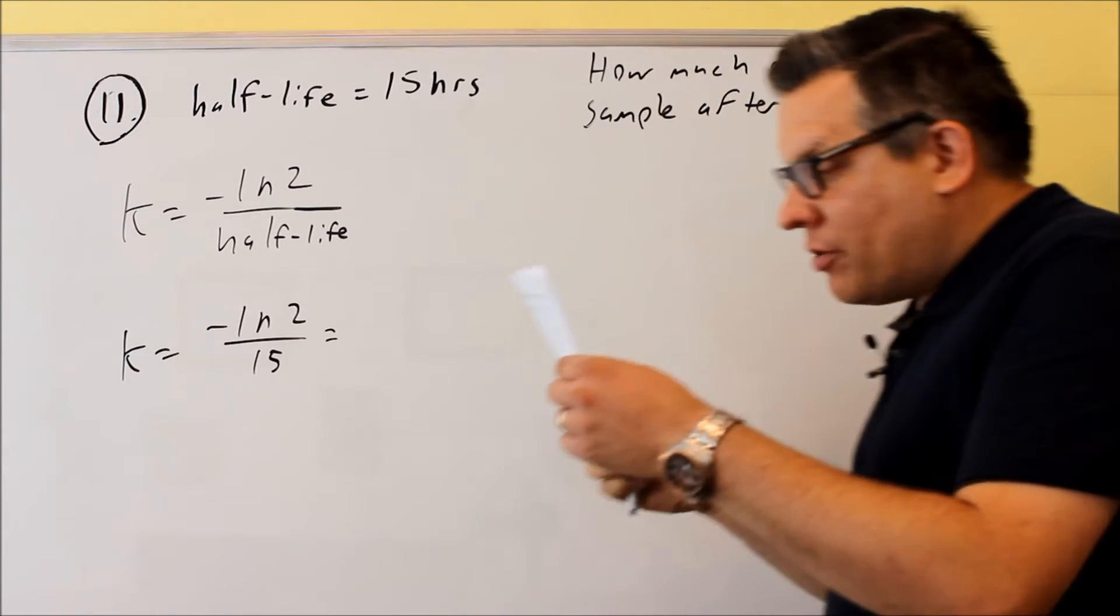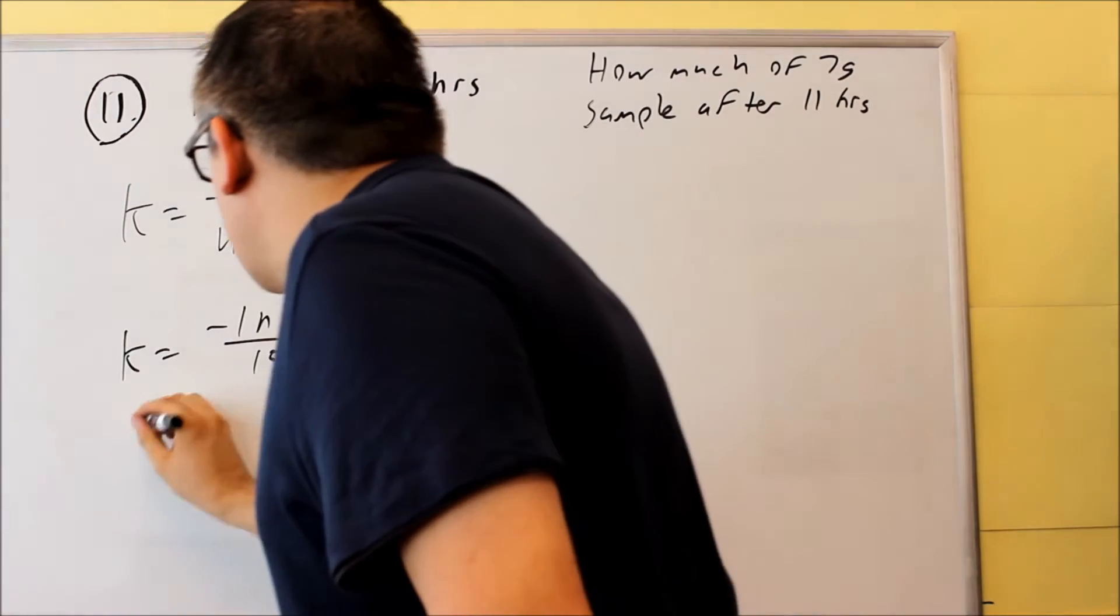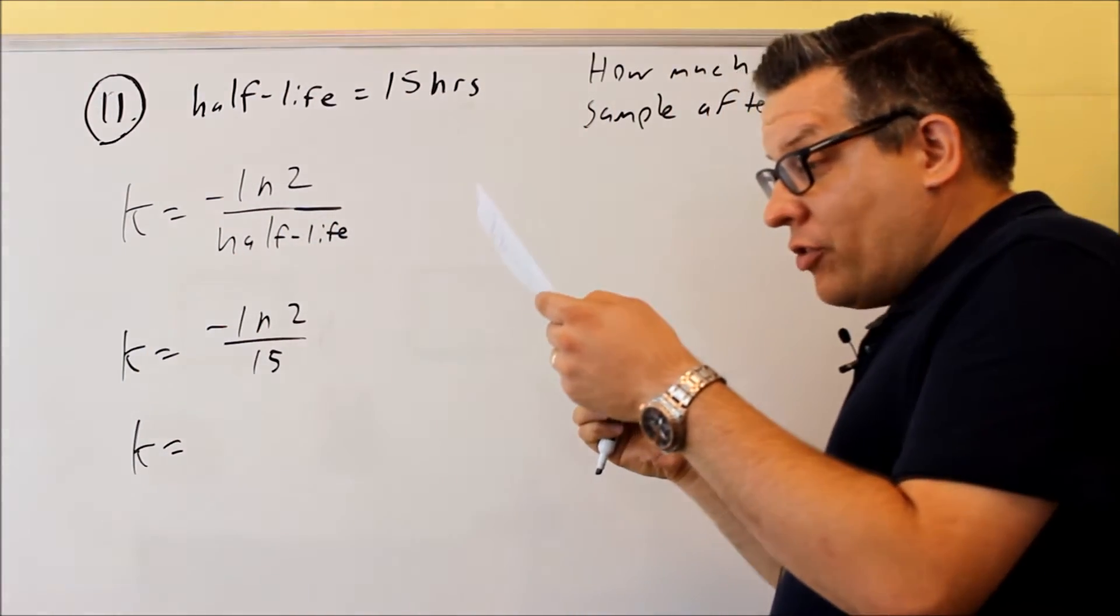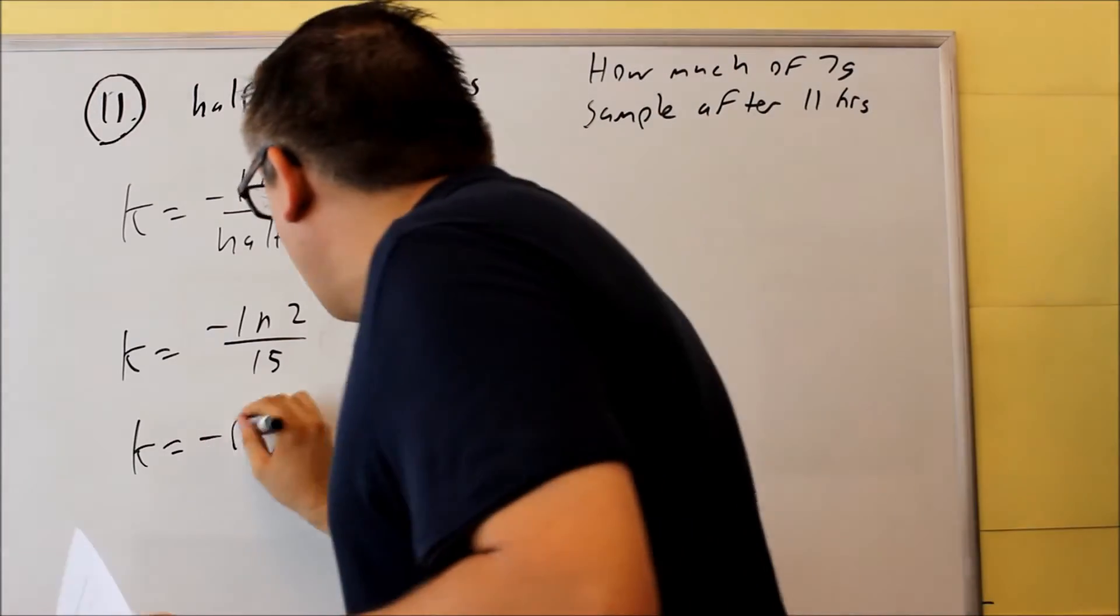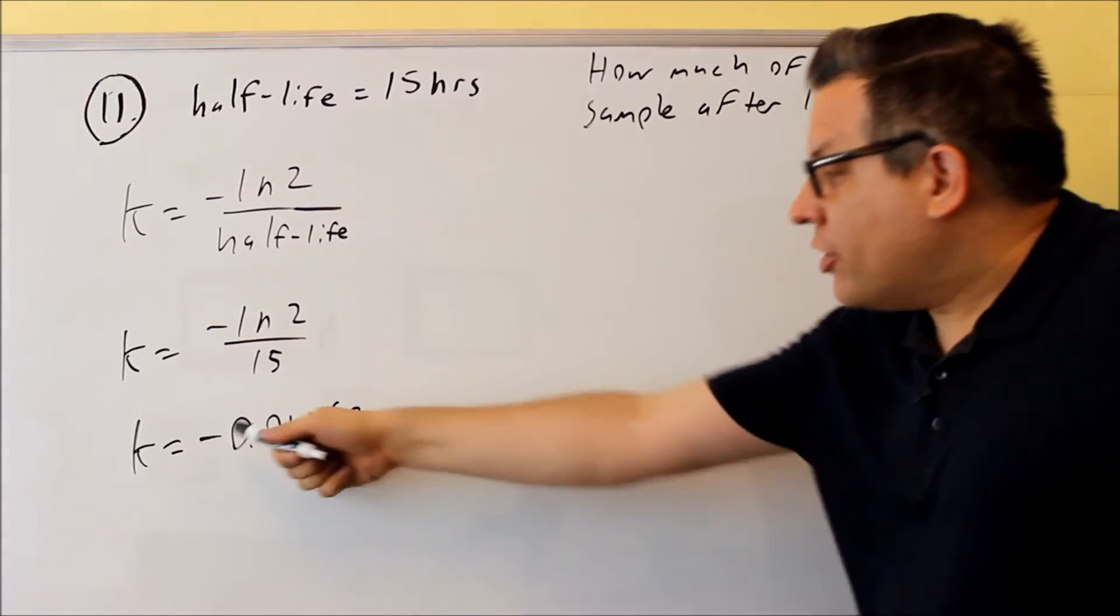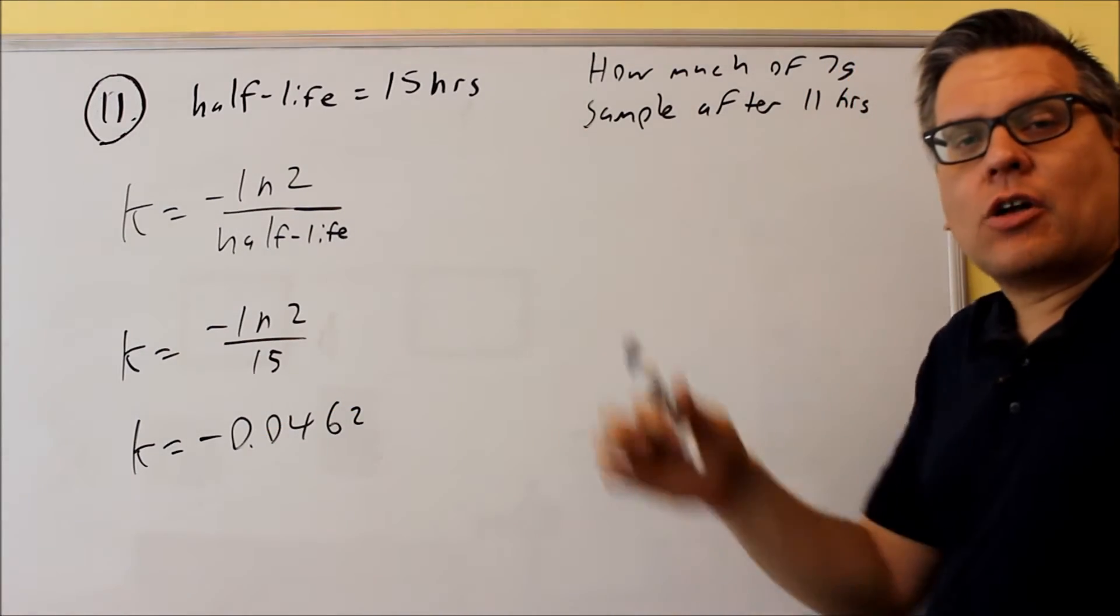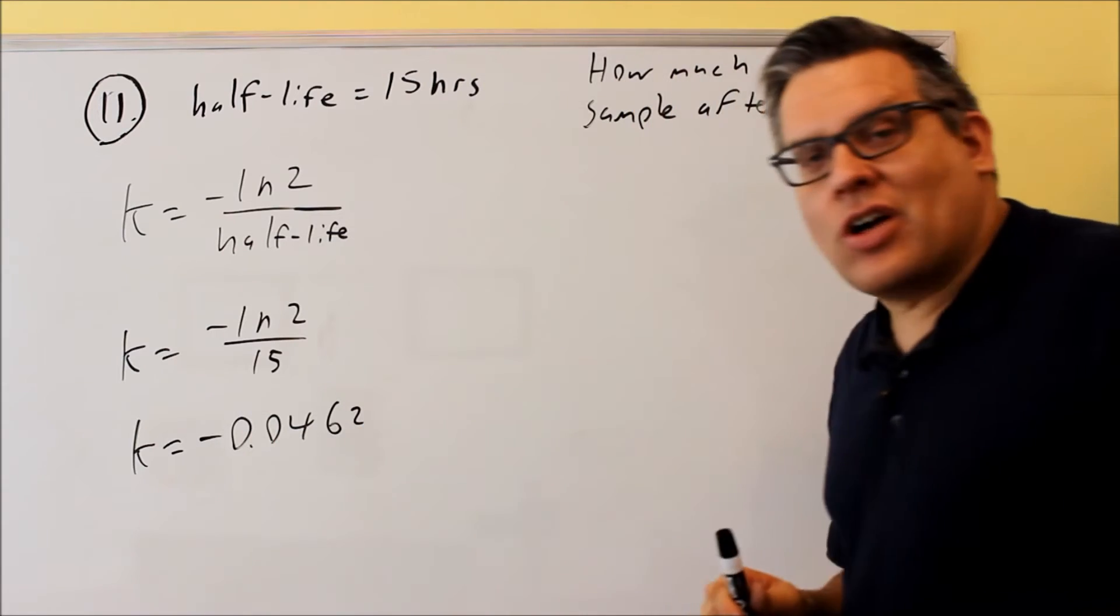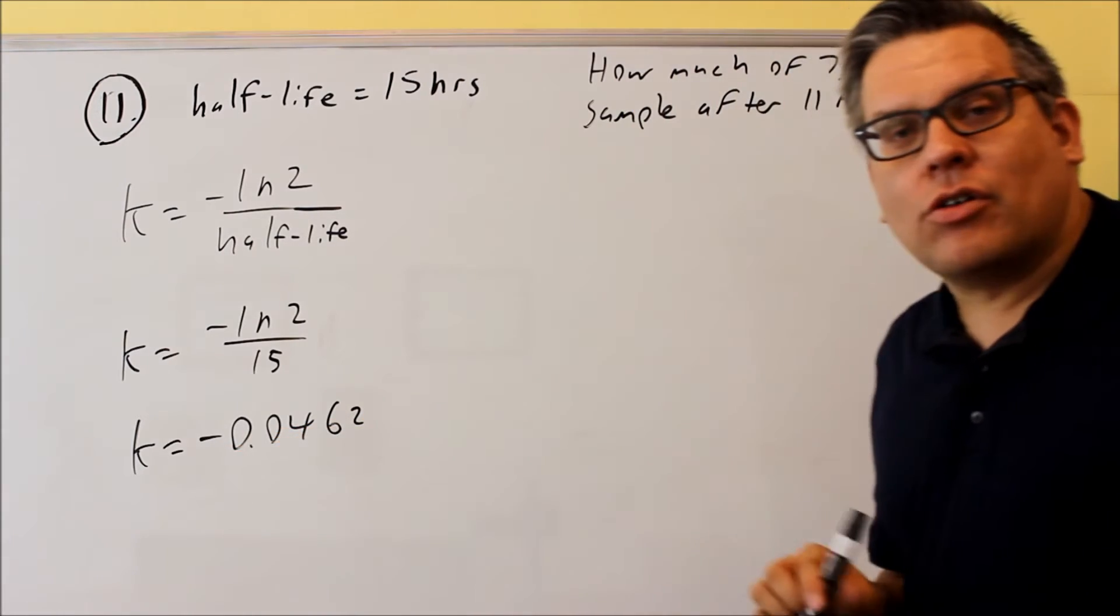Now if we put that into a calculator, what we get is negative 0.0462. It should be negative because half-life means that our amount is actually decaying, going down. The k-value tells you it's decaying because it's negative.